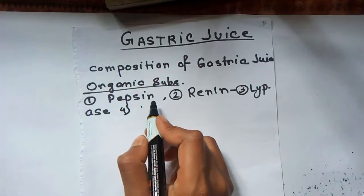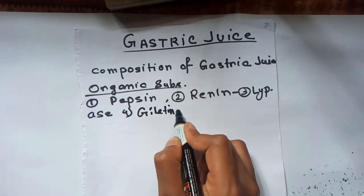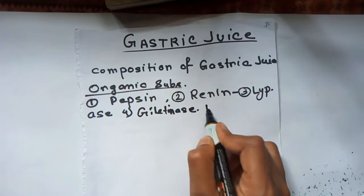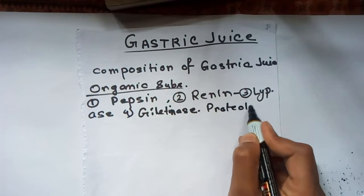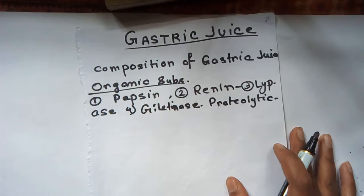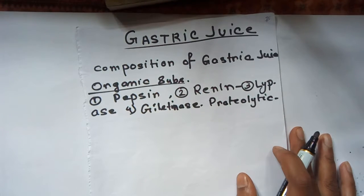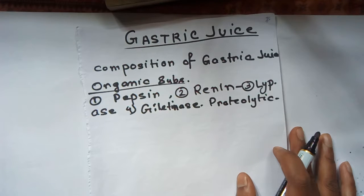Other gastric enzymes include gelatinase, which is a proteolytic enzyme, and urease, which catalyzes the breakdown of urea into carbon dioxide and ammonia.